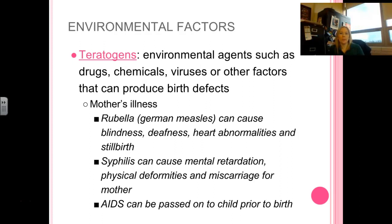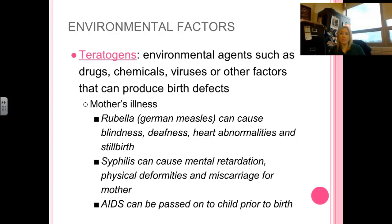In terms of the environmental component — the nurture side — the big piece here is teratogens. The number one teratogen that virtually everyone is aware of is fetal alcohol syndrome: if mom drinks, that has significant impact on fetal development. But there are other teratogens, which are any environmental agents that can produce birth effects. If the mother catches rubella, for example, that can cause blindness, deafness, and heart abnormalities, and the baby can even be stillborn. If the mother contracts syphilis, it can cause mental retardation, physical deformities, and even multiple miscarriages.